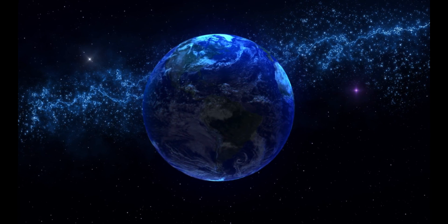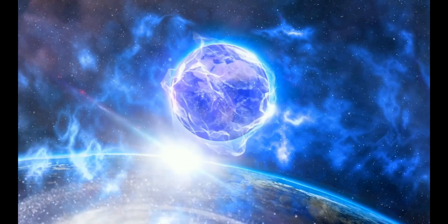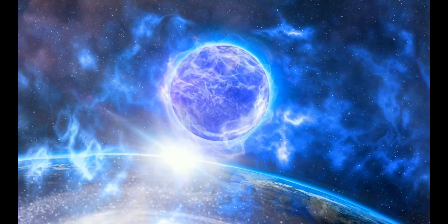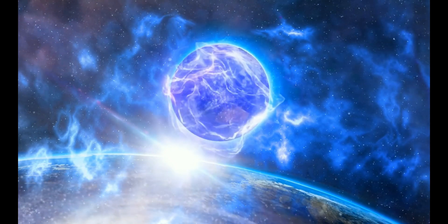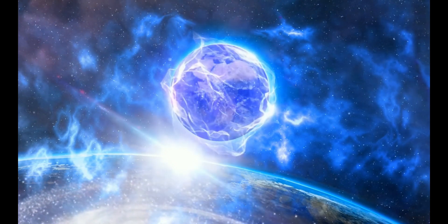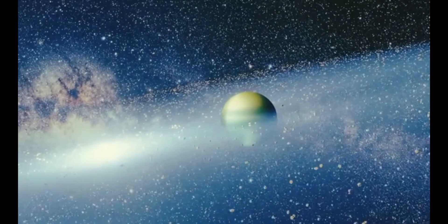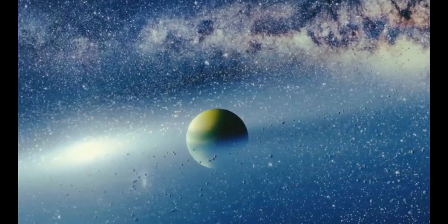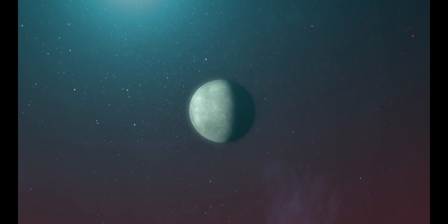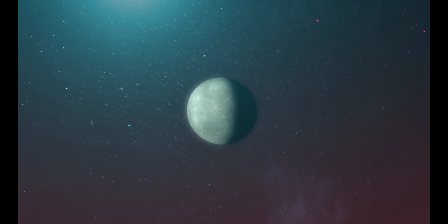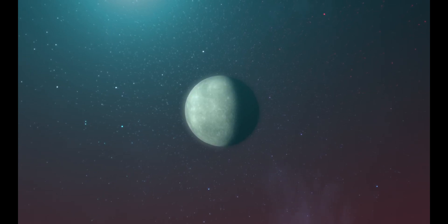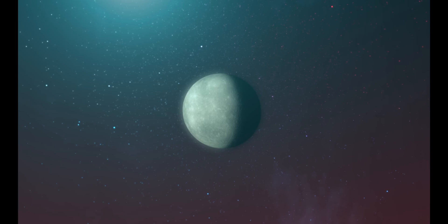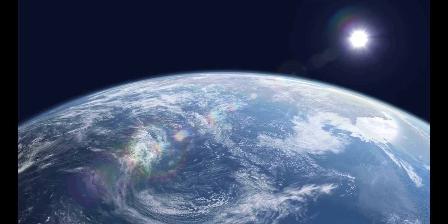In the past, similar collisions have caused temporary changes in a planet's weather patterns. For instance, when Comet Shoemaker-Levy 9 collided with Jupiter in 1994, it left dark scars in the planet's atmosphere for months and triggered massive storms. While Neptune's distance and frigid conditions make it difficult to predict the exact consequences, scientists are eager to monitor the planet closely in the coming weeks and months.